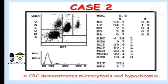Here you can see case two. A CBC demonstrating microcytosis and hypochromia — the answer is in the picture. Tell me: why is it microcytosis and hypochromic? Tell me the RBC index that demonstrates the microcytosis and hypochromic condition.